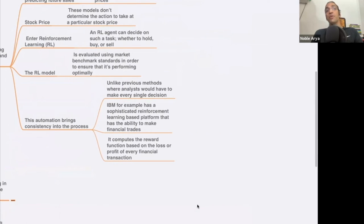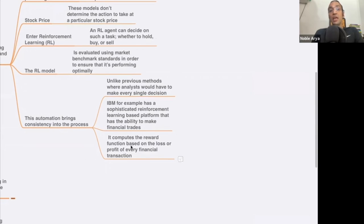Unlike previous methods where analysts would have to make every single decision, IBM, for example, has a sophisticated reinforcement learning based platform that has the ability to make financial trades. You can search for IBM, which application they're using for reinforcement learning for financial trade, and you can learn from it.